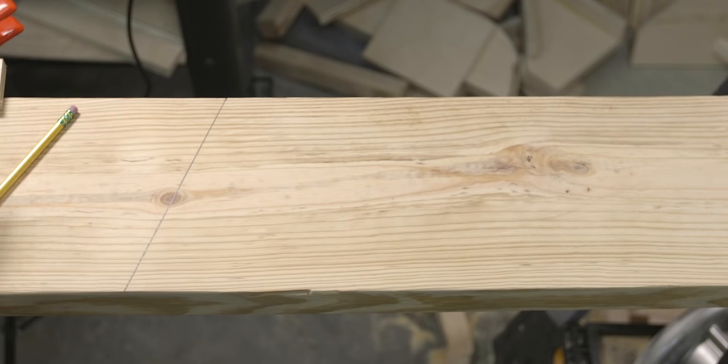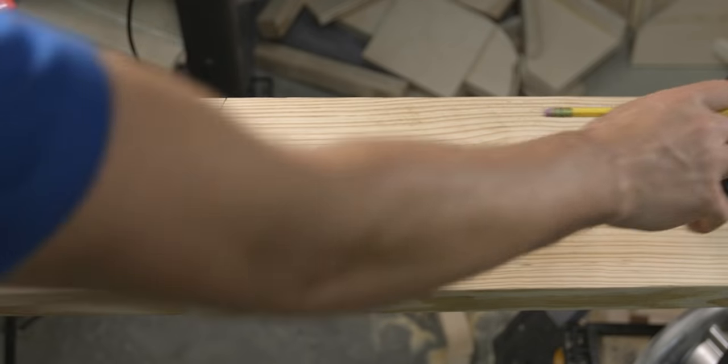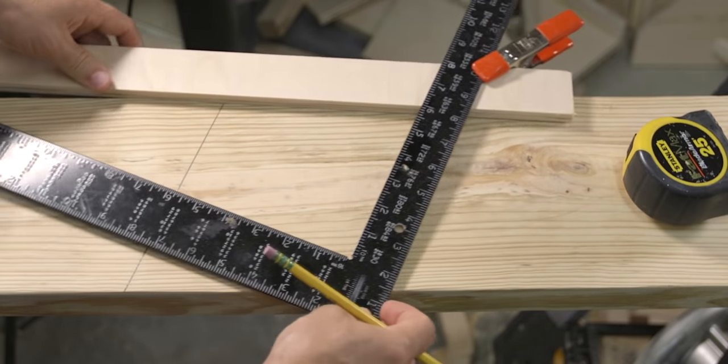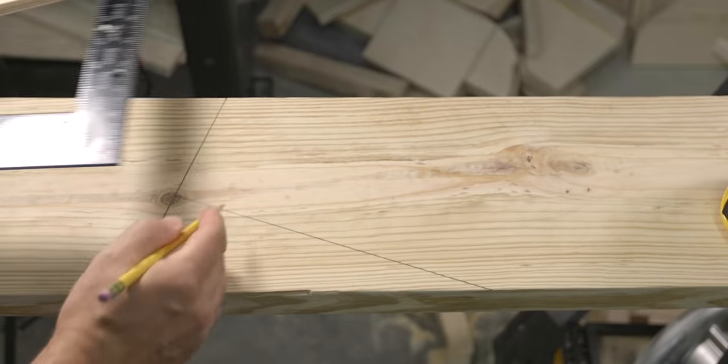If we now go back to our layout, we can measure down four and a sixteenth, make a mark, and draw the seat cut. Now, we're not quite done with the seat cut yet, because if we were to cut that line right here, the rafter would fit, but it would be too high.